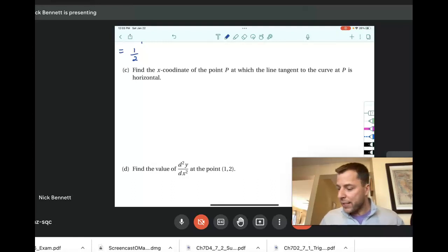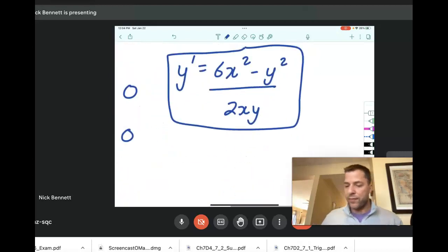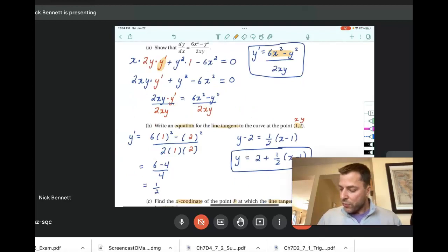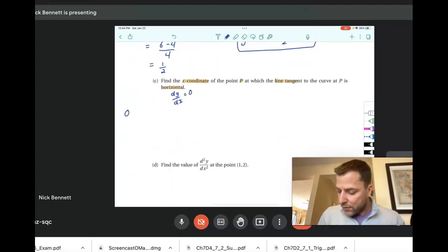Now, in part c and d, those are the bigger parts. We need the x-coordinate, the x-value of some point P, which the line tangent to the curve is horizontal. Well, what they're talking about there is dy/dx being 0. dy/dx is 0. A horizontal slope. So we want our slope to be 0. Well, if our derivative, if our slope is equal to this, the only way to make a fraction 0 is to make the numerator 0. So we're going to go ahead and set our numerator 6x² minus y² equal to 0.